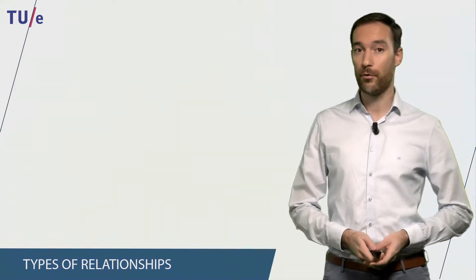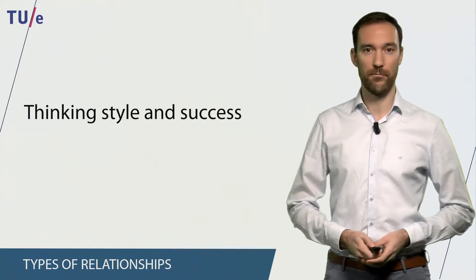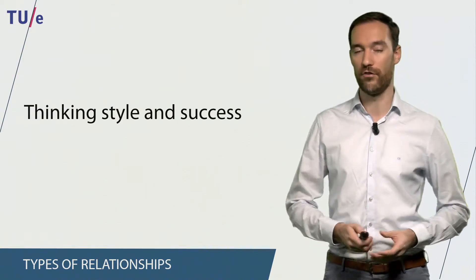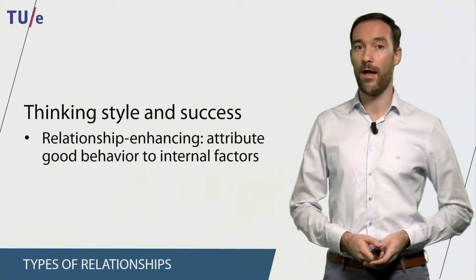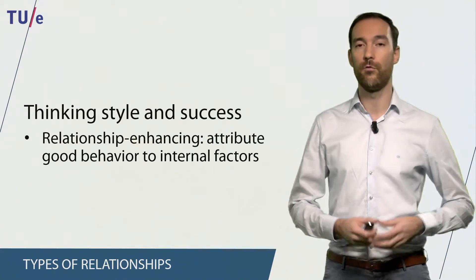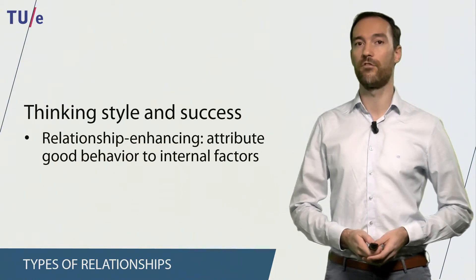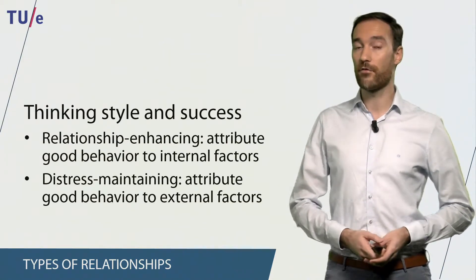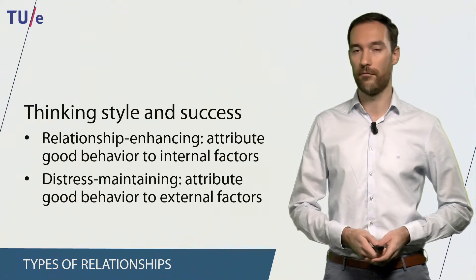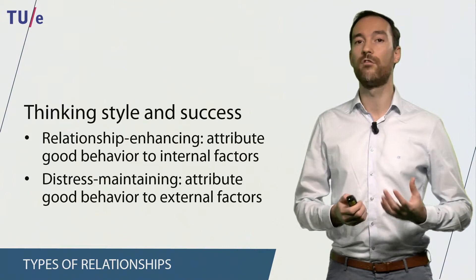In addition to having personal attachment styles, people in a relationship also tend to apply different thinking styles, and the success rate of a relationship can depend on the thinking style used. If people apply a relationship-enhancing thinking style, they tend to attribute the good behavior of their partner to internal factors — if their partner does something good, they think it's because they are a good person. If a person applies a distress-maintaining thinking style, they attribute good behavior to external factors and think their partner does something good because somebody told them to do so.